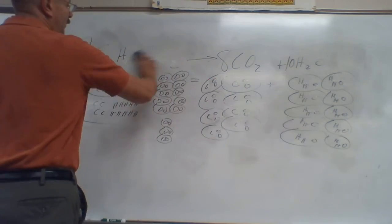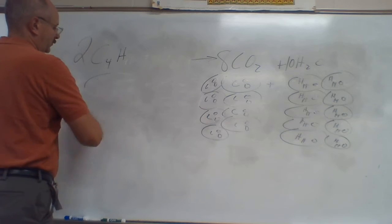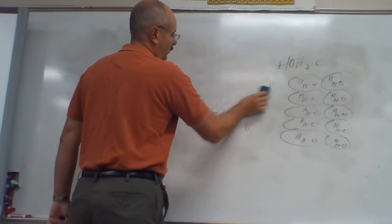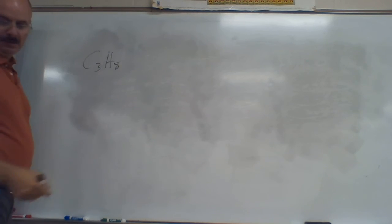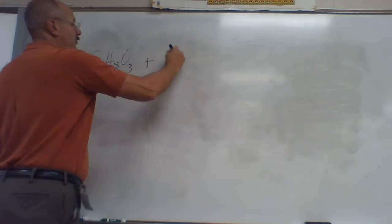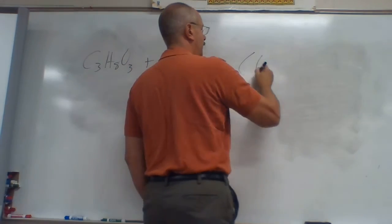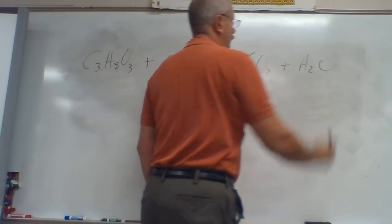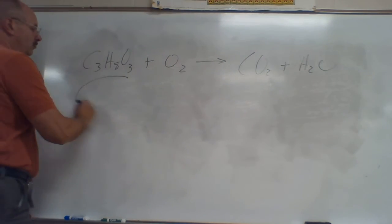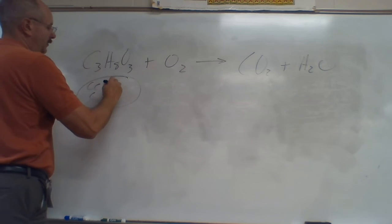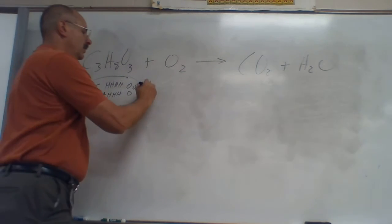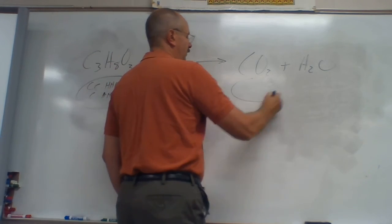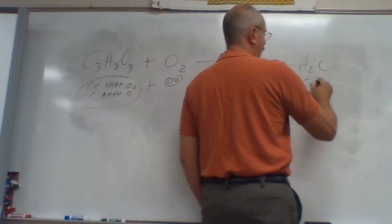Let's go on to the very last one — the last combustion one. We got C₃H₈O₃ plus O₂, and what do they always make? Carbon dioxide and water. So now I'm going to balance it. I got three C's, eight H's, and this one actually has some oxygen — there's three oxygens — plus two oxygens. That's equal to C and two O's, plus two H's and an O.